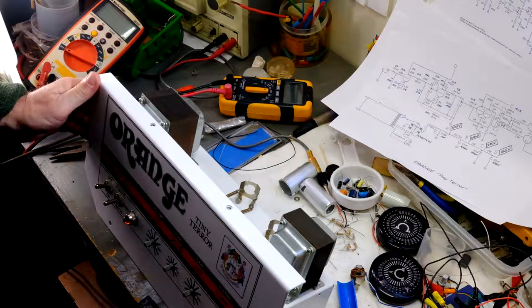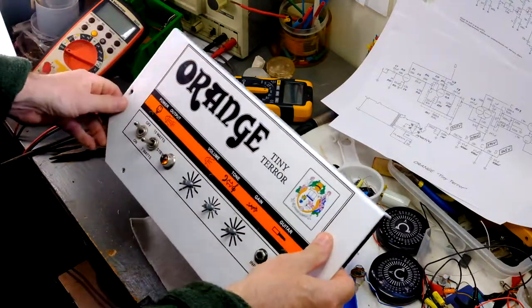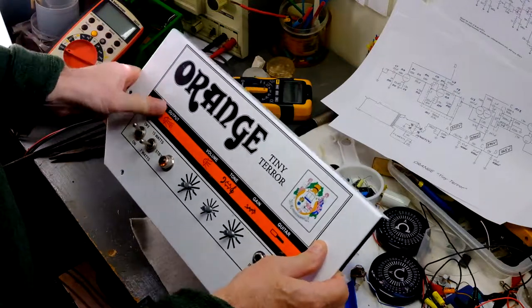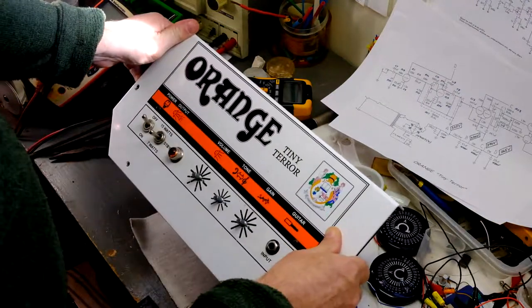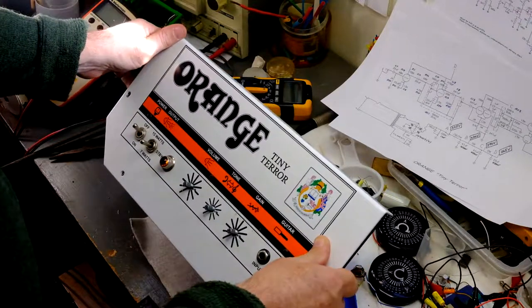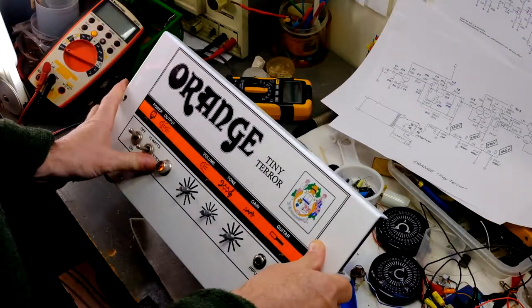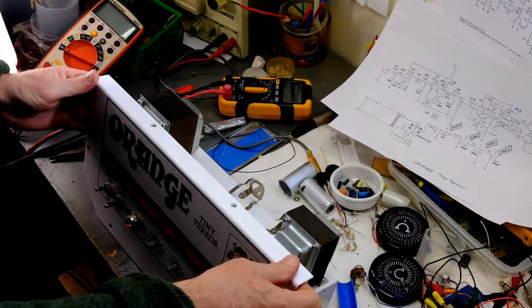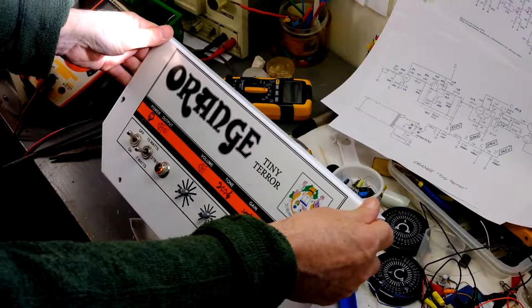Okay, the Orange Tiny Terror. This is Dan's amplifier. He bought it secondhand. The problem was it kept blowing fuses, apparently. He took it to a guy who looked at it and gave it back, and then it stopped working again.